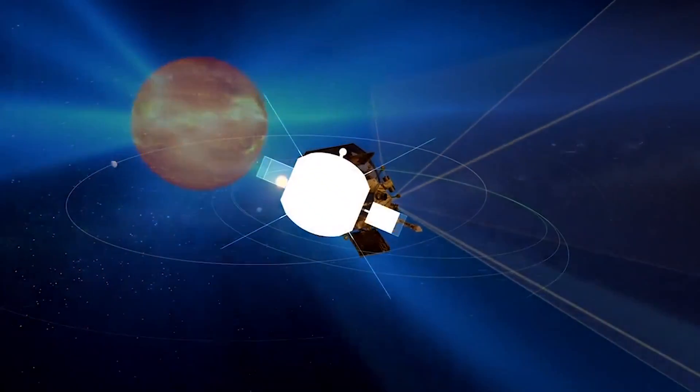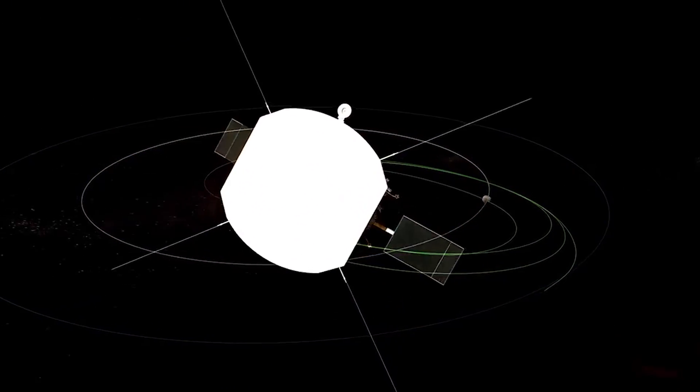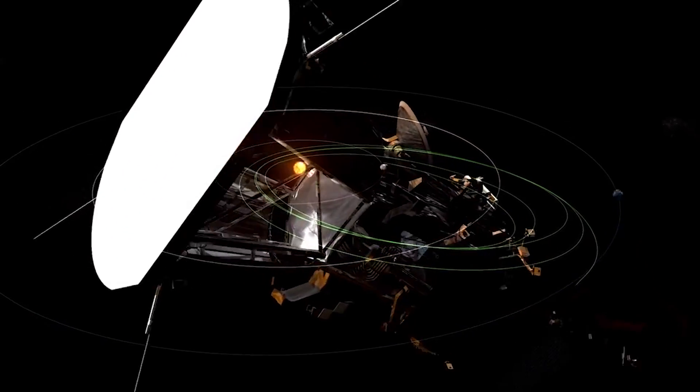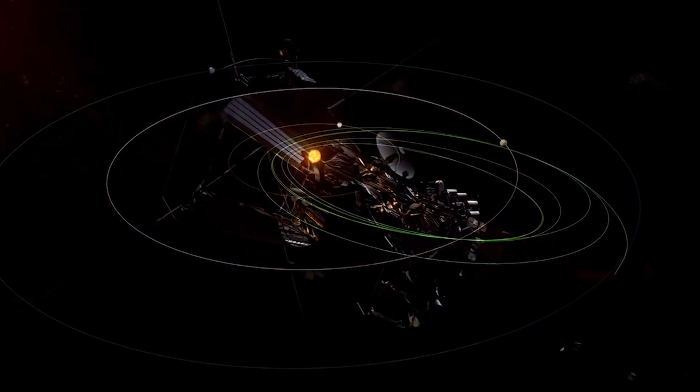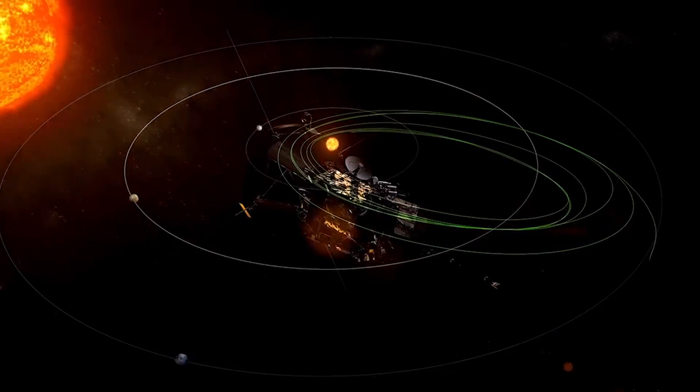By getting this close, we'll not only be able to image what is happening in this area, but also record the magnetic fields, electrical fields, and the particles' temperature and velocities to see how they change as we get further and closer to the sun.